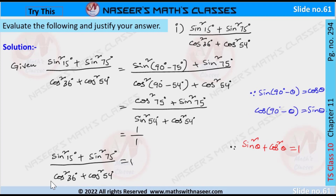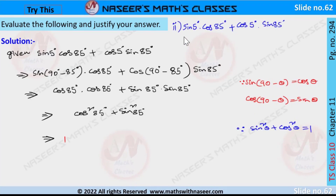Therefore we can replace both numerator and denominator with 1. So 1 divided by 1 equals 1. Therefore sin²15° + sin²75° divided by cos²36° + cos²54° is equal to 1. Now we are going to solve the second one.